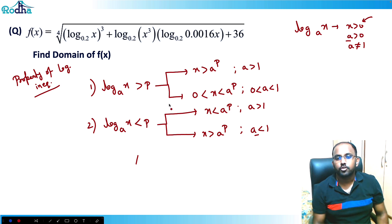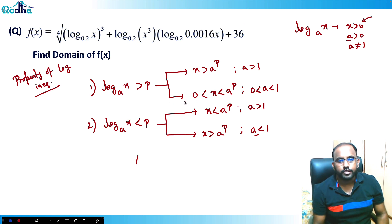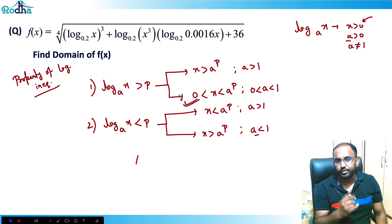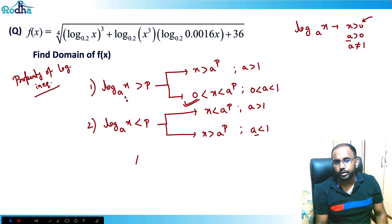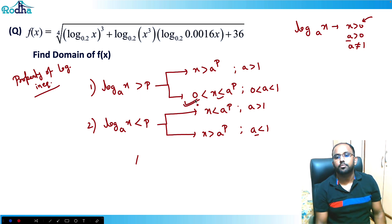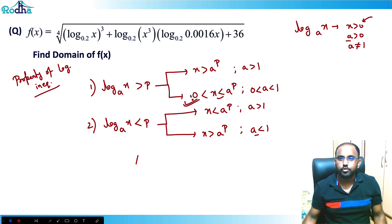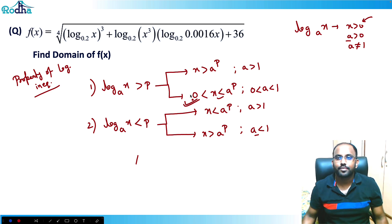In the last question, we used this property — since the base was 0.2, which is between 0 and 1, the inequality sign reversed when we converted log(x, base 0.2) ≥ −3 to x ≤ 0.2^(−3).